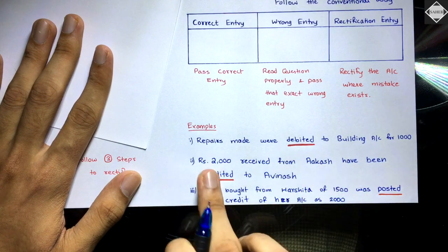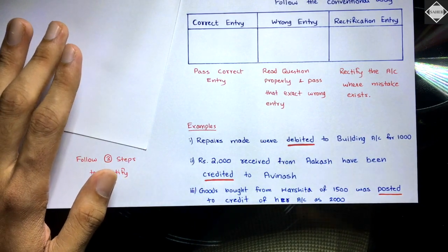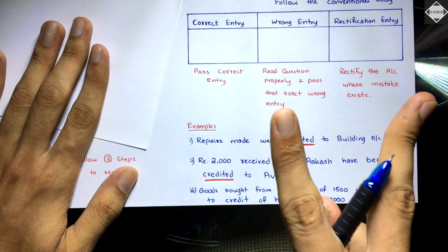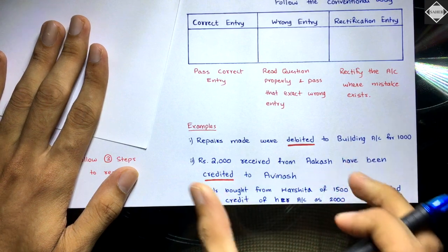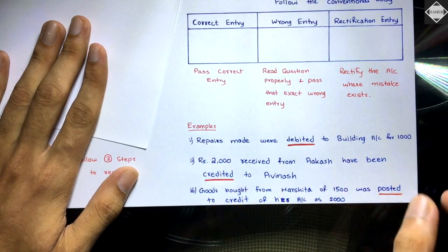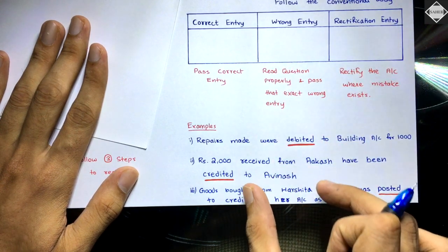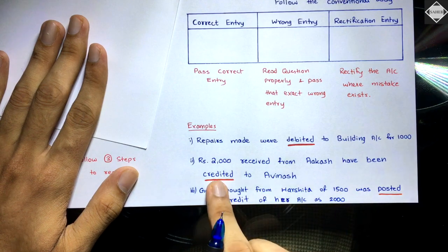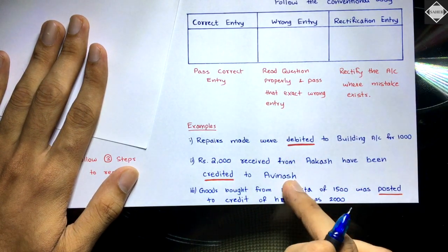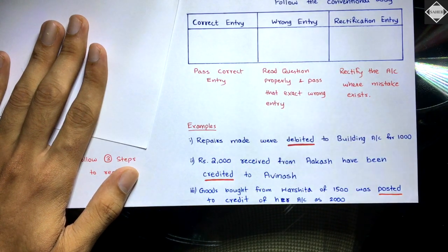Second example: '₹2000 received from Akash have been credited to Avinash.' Read in two parts. Correct part: ₹2000 received from Akash — entry is cash account debit to Akash ₹2000. Wrong part: have been credited to Avinash — so the wrong entry is cash account debit to Avinash. Akash's name didn't appear; Avinash's name came instead. Third example: 'Goods bought from Harshita of ₹1500 was posted to credit of her account as ₹2000' — the keyword 'posted' confirms this is the second category.